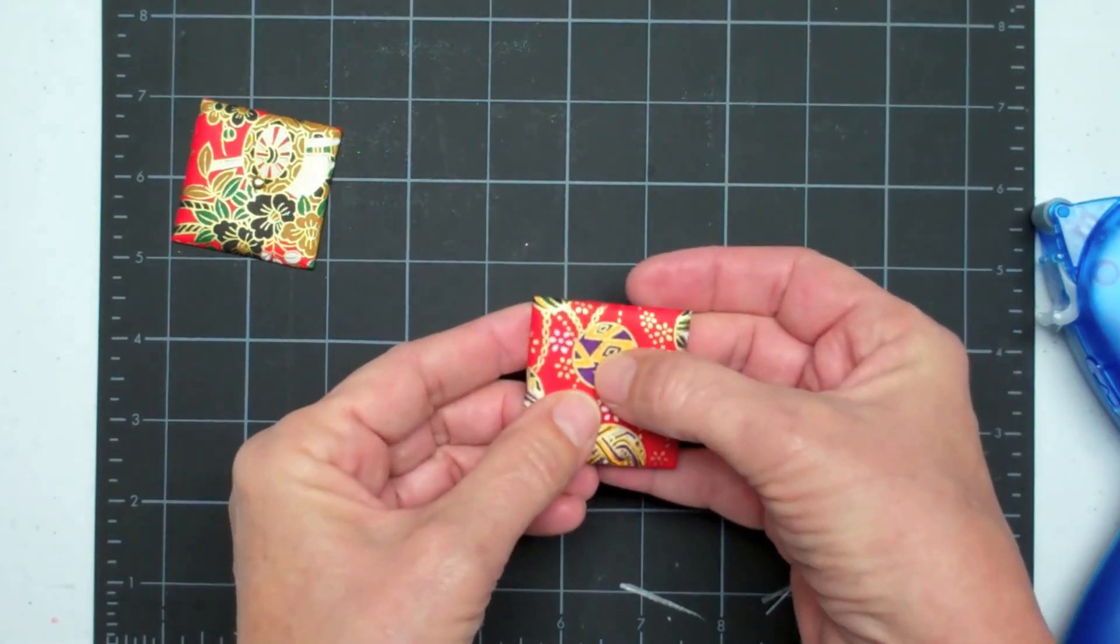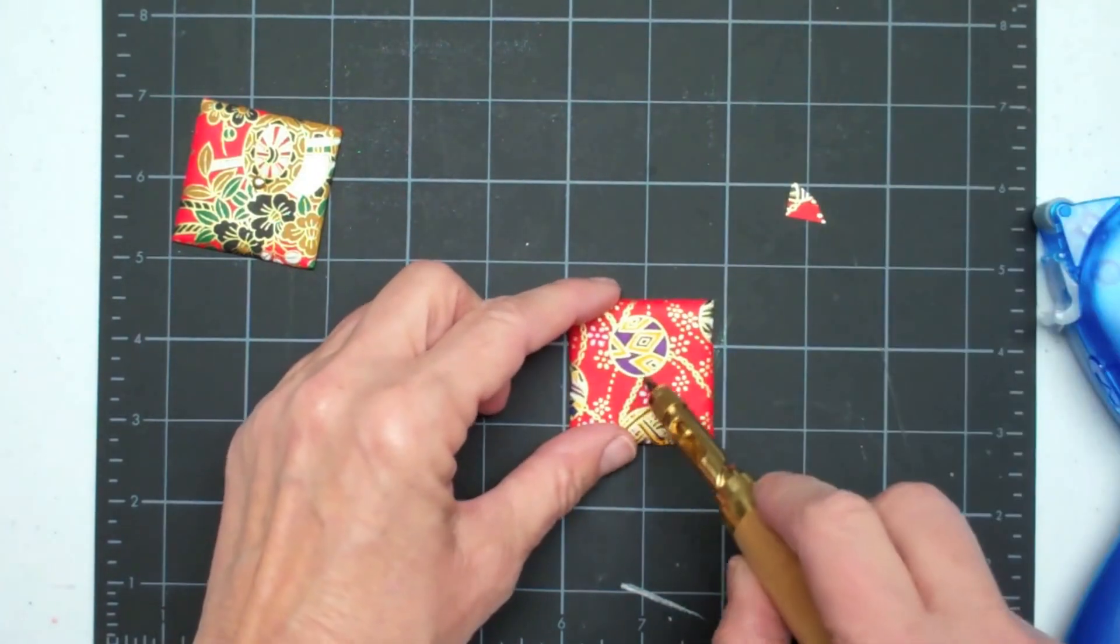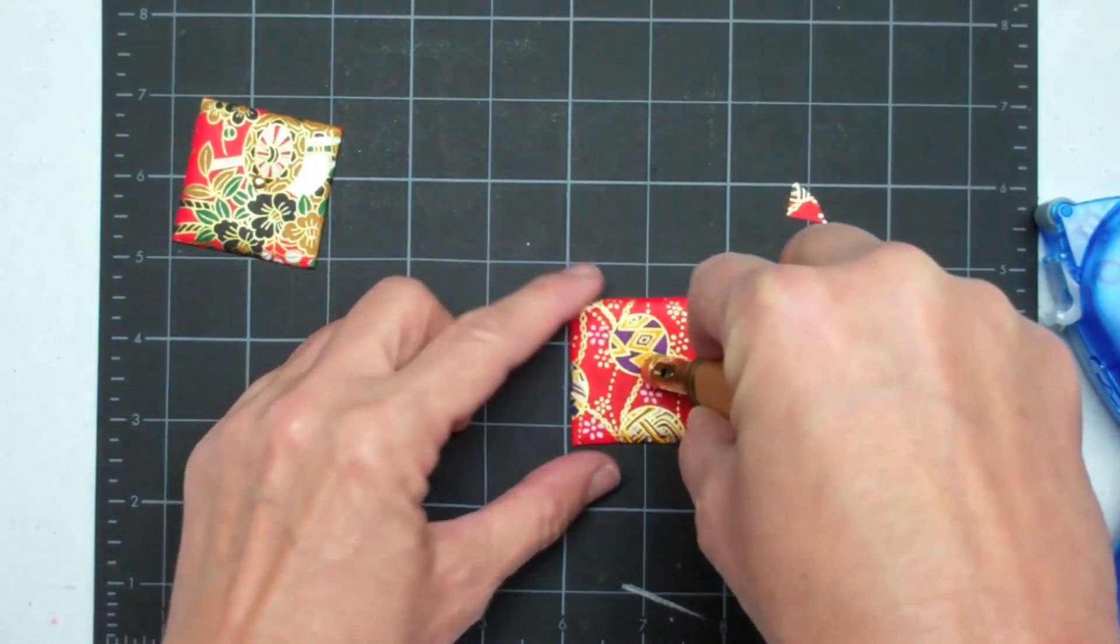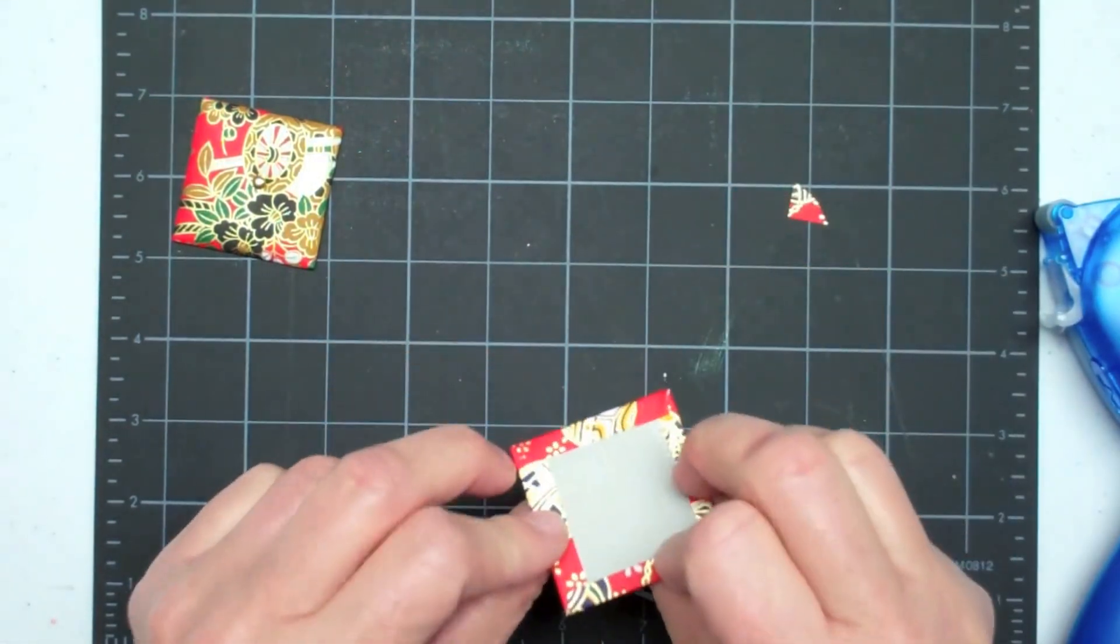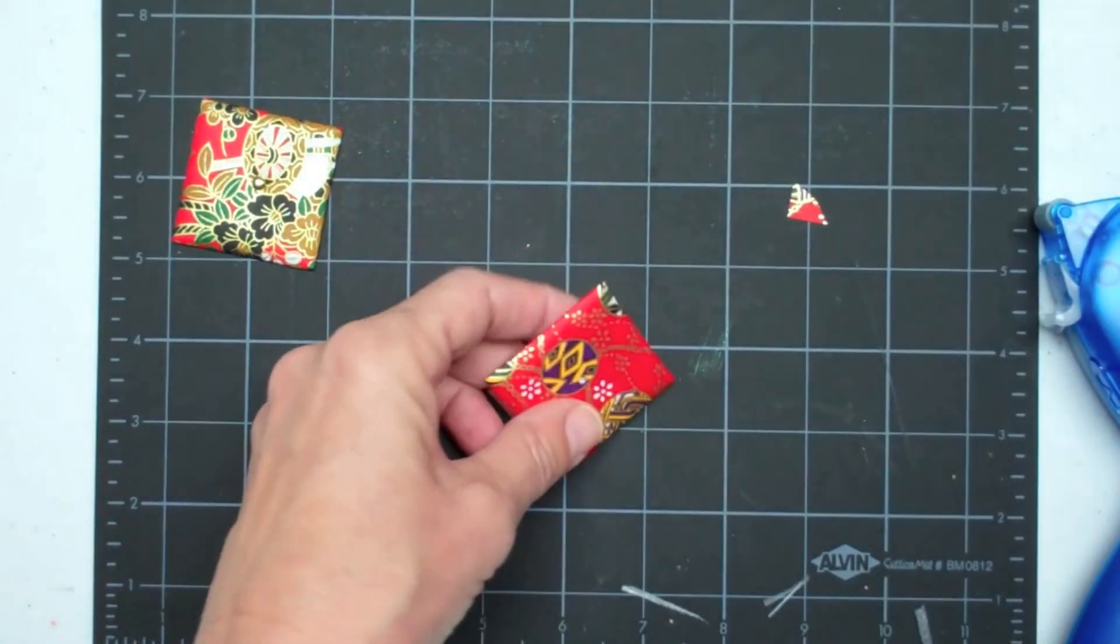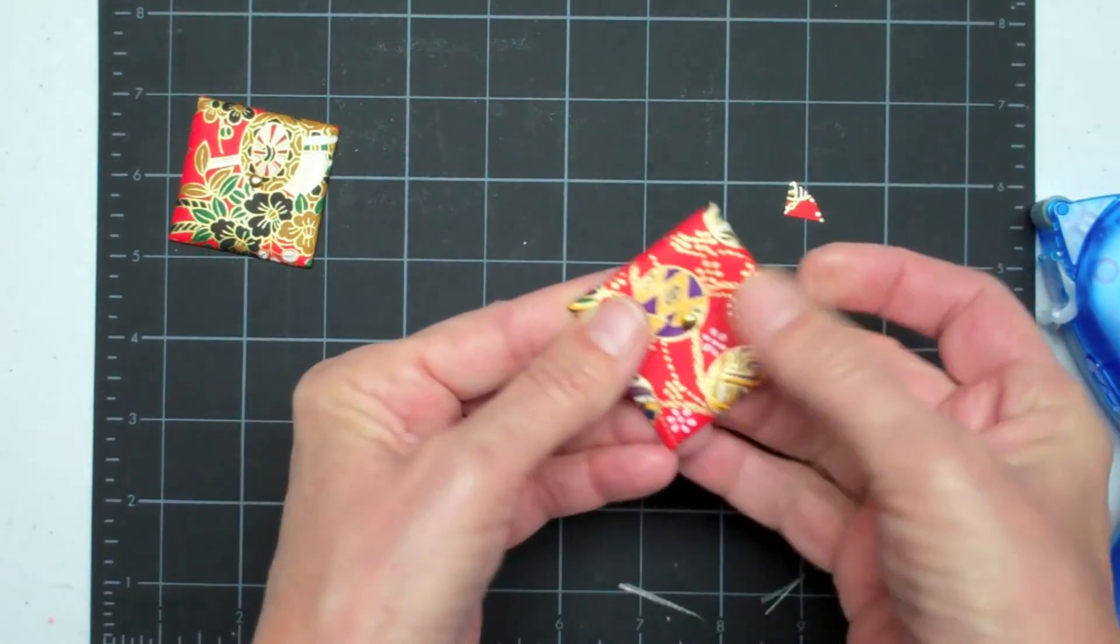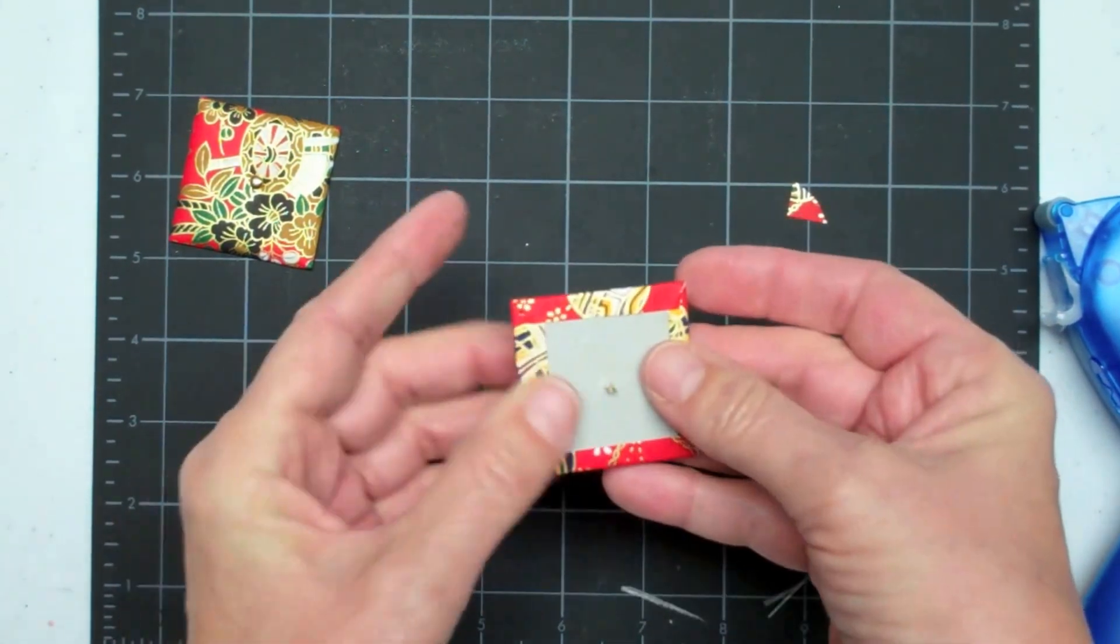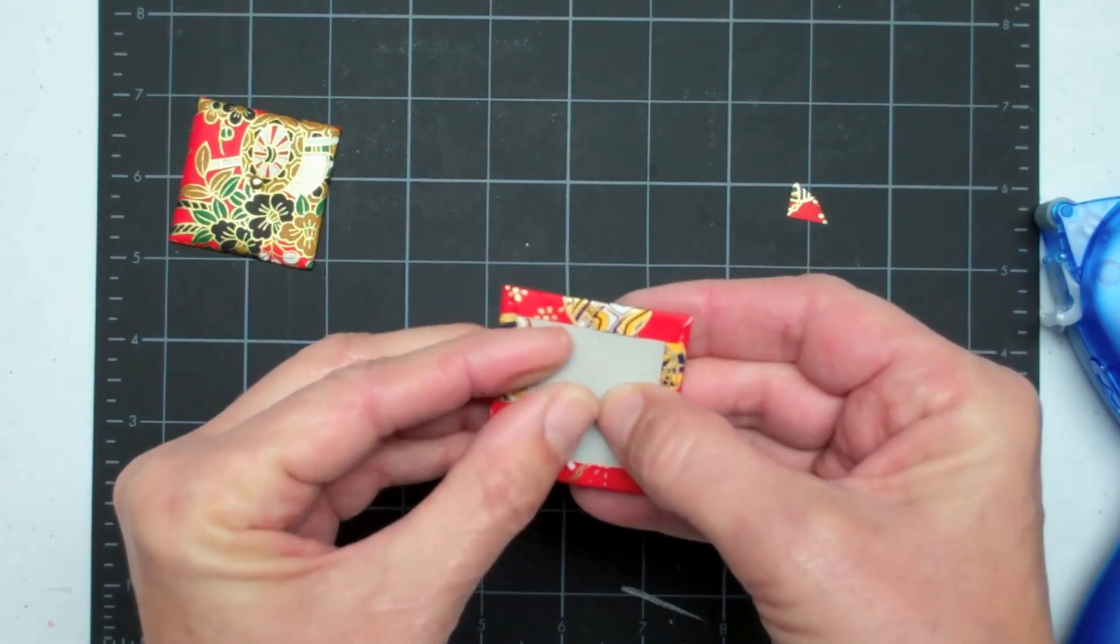I'm going to put a little brad in the center. I'm just going to find my center and kind of eyeball it there. Hit it a couple times with a screw punch. If it doesn't go all the way through that's okay, just do it another time or use an awl if you need to. Put the brad right through and open the prongs on the other side, get them down nice and flat.